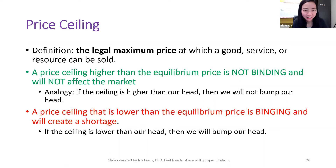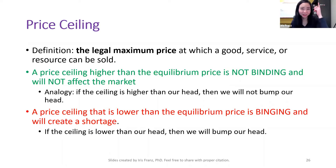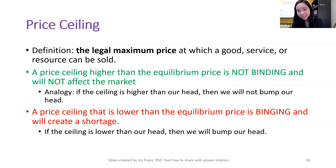If the price ceiling is above the equilibrium price, then it is not binding and it will not affect the market. As an analogy, think about the ceiling above our head — our ceiling is above our head, so you don't notice it and it does not affect you. Similarly, if a price ceiling is above our equilibrium price, then it is not binding and it will not affect the market.